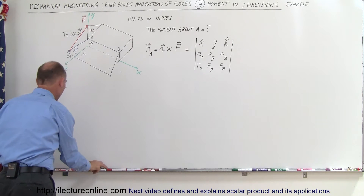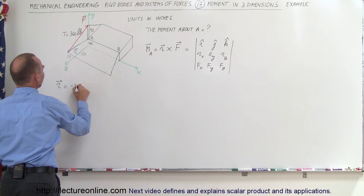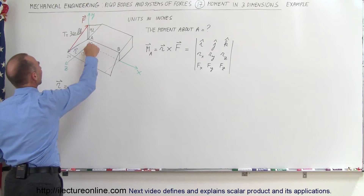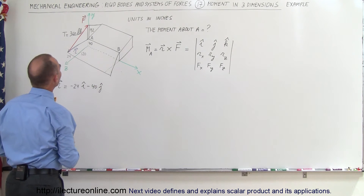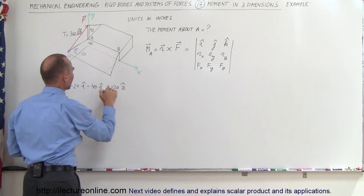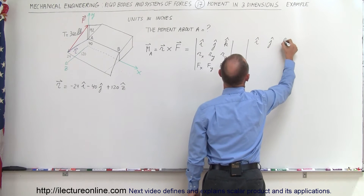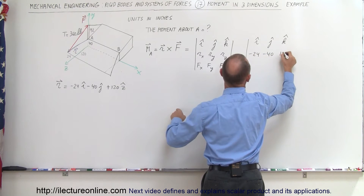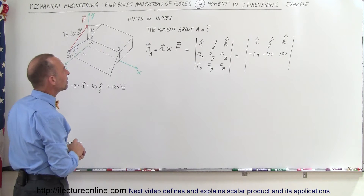To find the position vector R, we treat point A as the origin. In the X direction we go negative 24 inches, giving us minus 24 I. In the Y direction we go down 40 inches, giving us minus 40 J. In the Z direction we go 120 inches, giving us plus 120 K. So R equals minus 24 I, minus 40 J, plus 120 K — all in inches. We still need to find the X, Y, and Z components of the force vector.